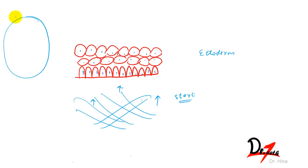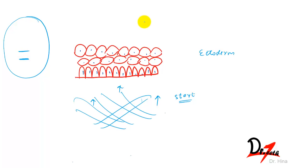Tooth development first occurs in the anterior portion of the future maxilla and the future mandible, because they are still not fully developed at this stage.